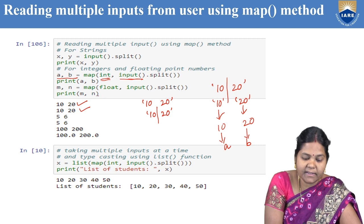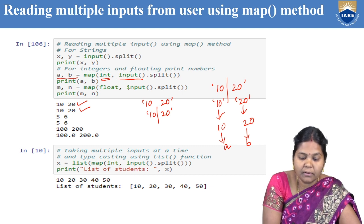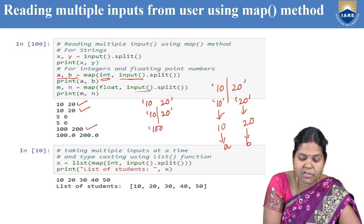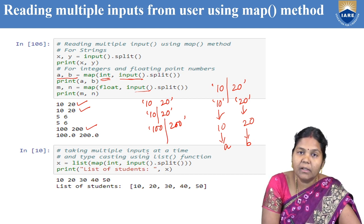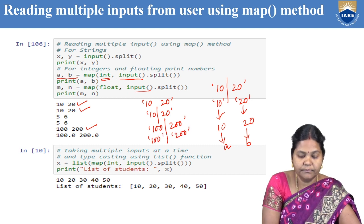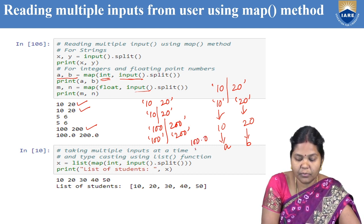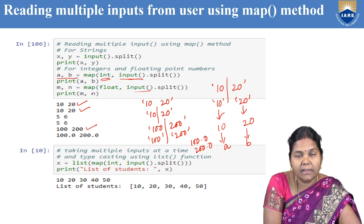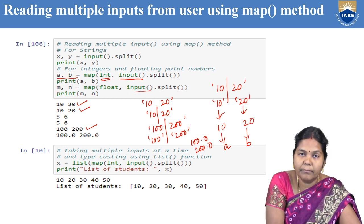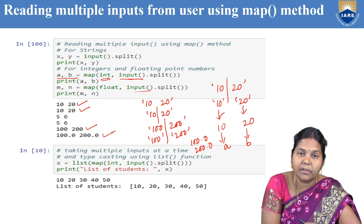Similarly, to read two float numbers: m, n = map(float, input().split()). If you give input as '100 200', the split method splits it into two strings, the float method converts them to 100.0 and 200.0, and the map method maps the values into m and n. If you print, the output will be 100.0 and 200.0.